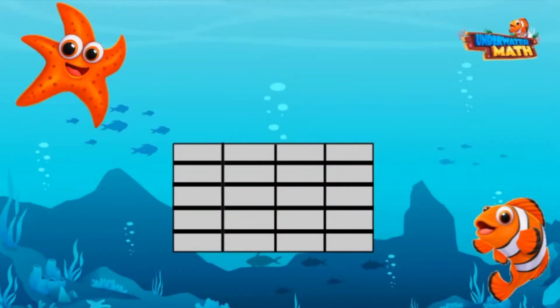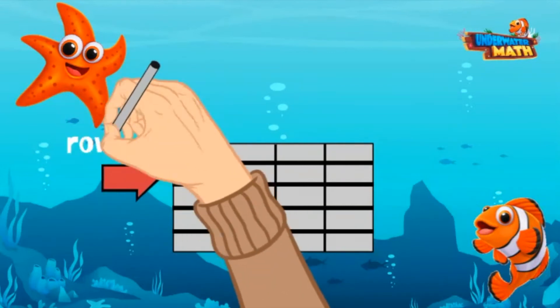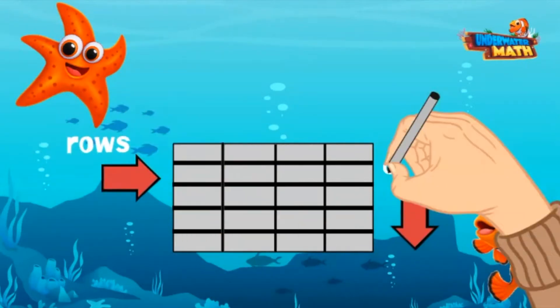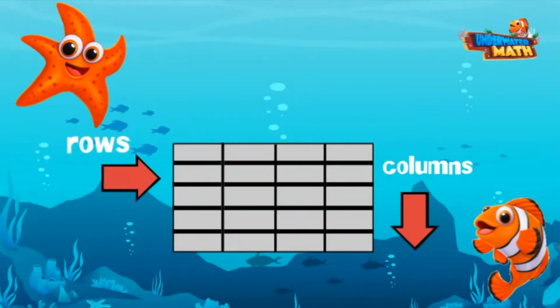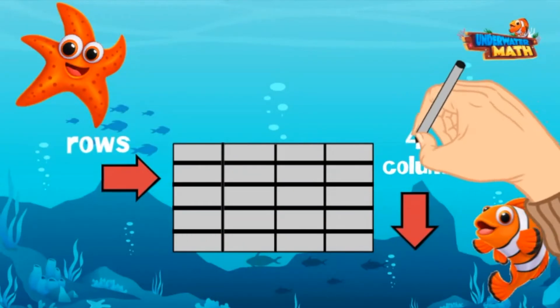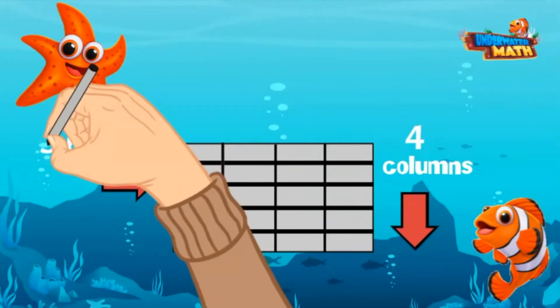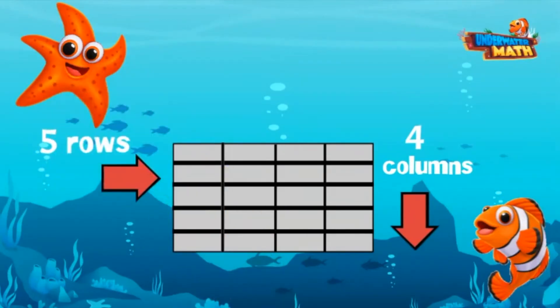Remember, rows are horizontal or across. Columns are vertical, or up and down. There are 4 columns and 5 rows. In each column there are 5 boxes. In each row there are 4 boxes.